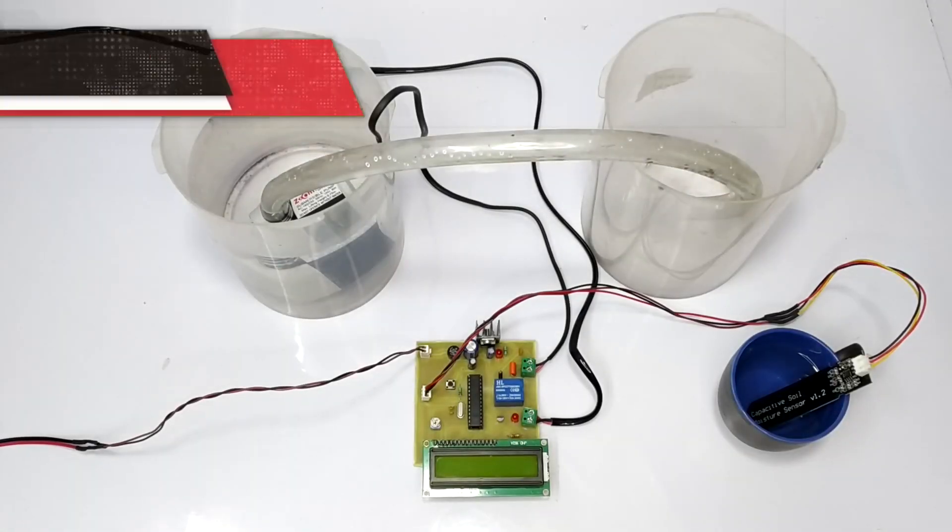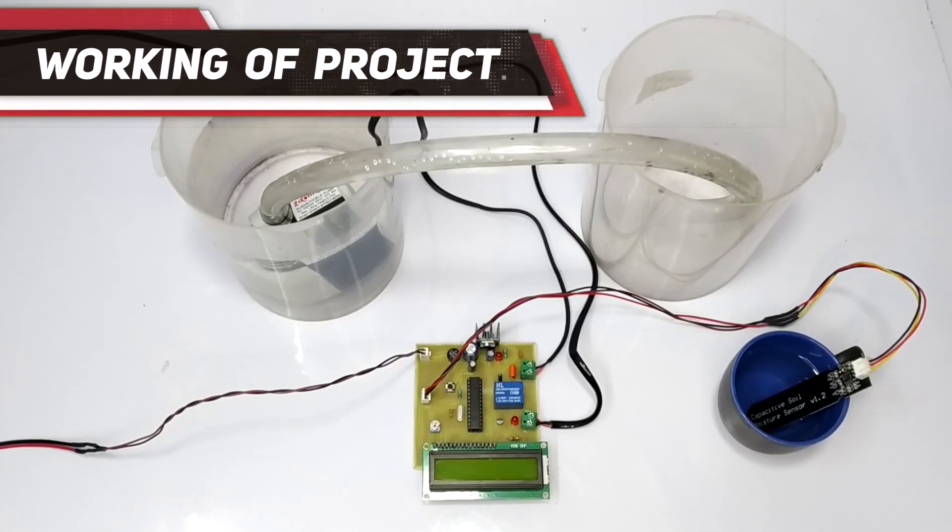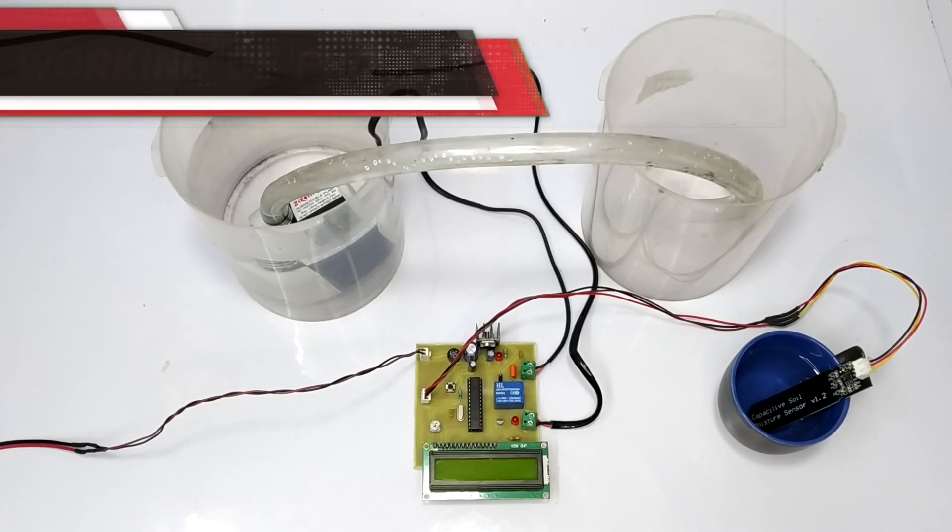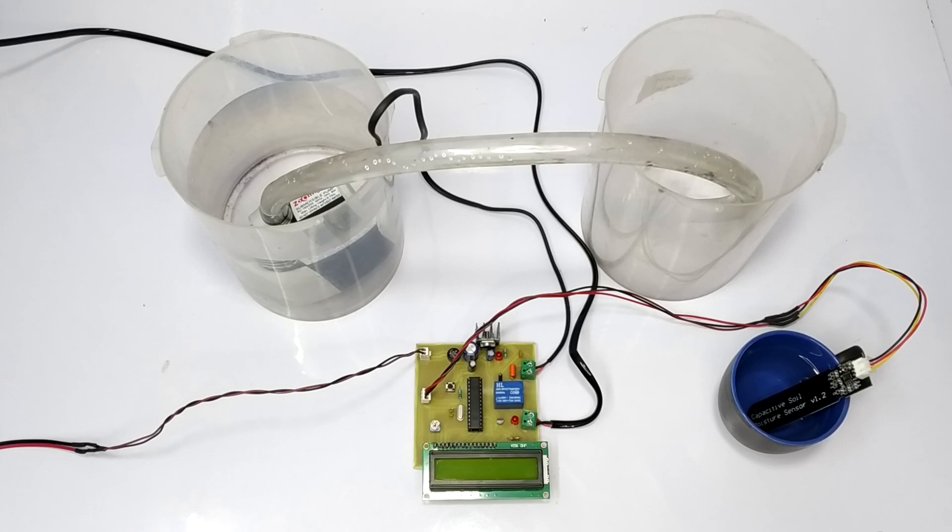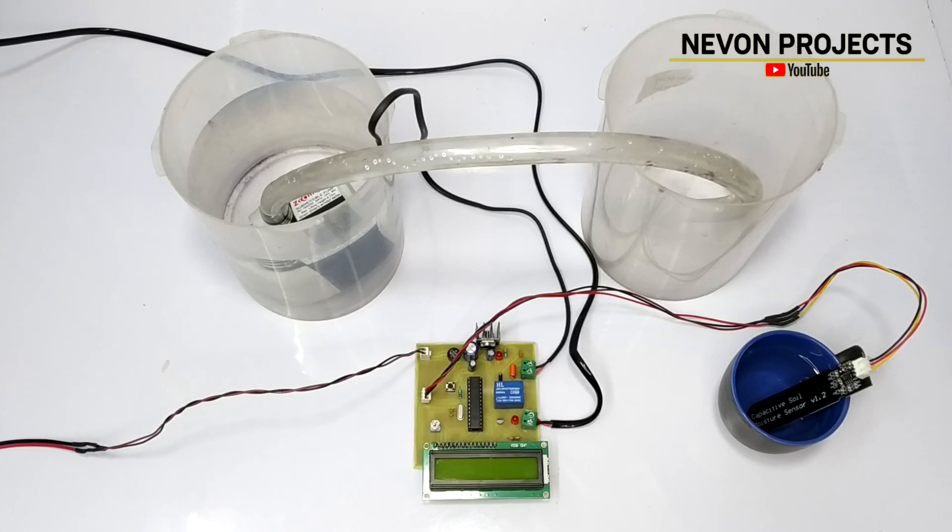Hello, friends. Welcome to nivonprojects. Today, we are going to demonstrate the working of auto irrigation using soil moisture sensing using Atmega. Before moving on to the working, let's know what are the main components of the circuit.